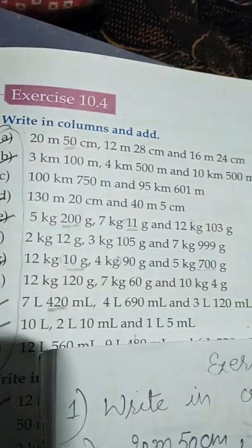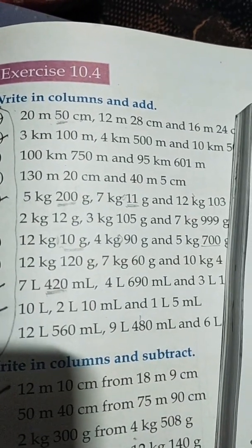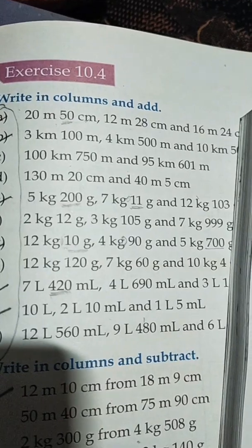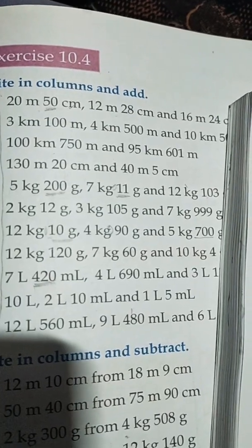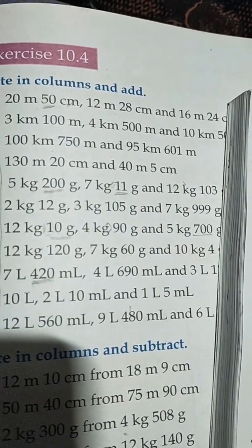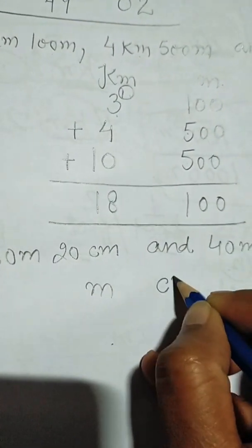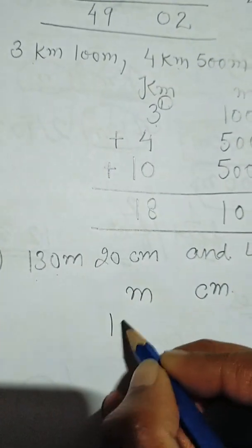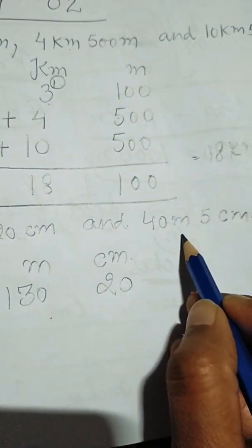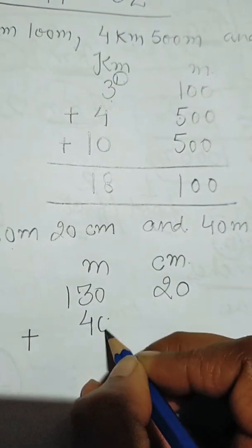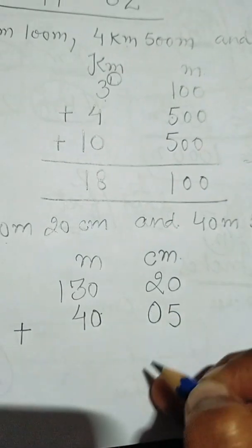Now see part D. The statement is 130 meter 20 centimeter and 40 meter 5 centimeter. We will write meter and centimeter. 130 meter 20 centimeter, then plus 40 meter 5 centimeter. We write 40 here, and 5 centimeter — we write 5 here and put one zero before it.